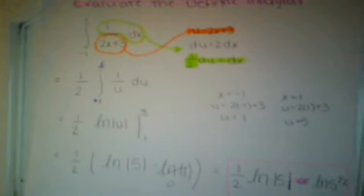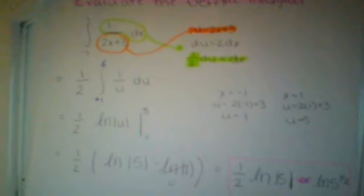So when x equals negative 1, u equals 1, and when x equals 1, u equals 5.